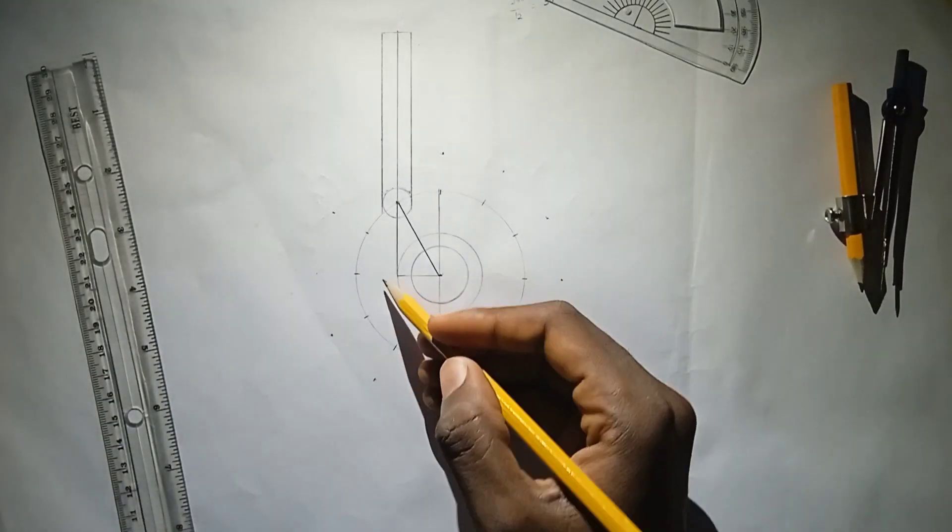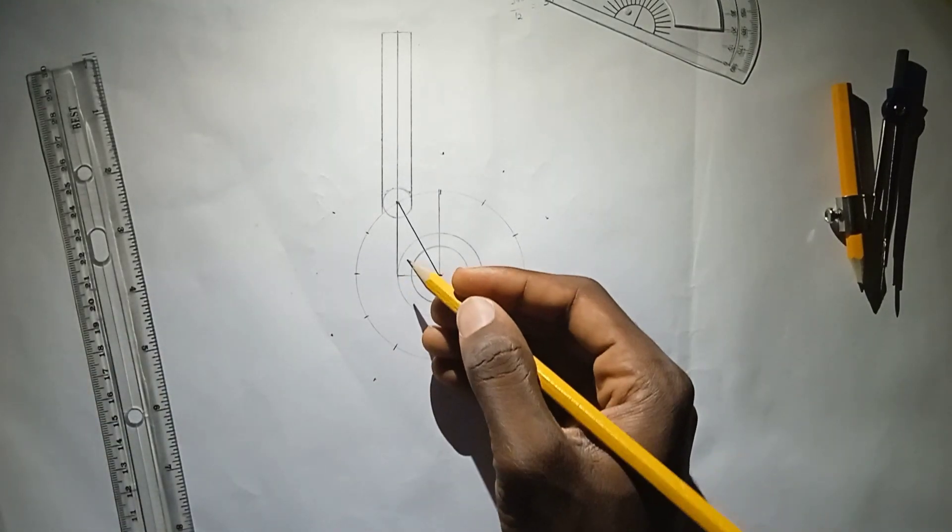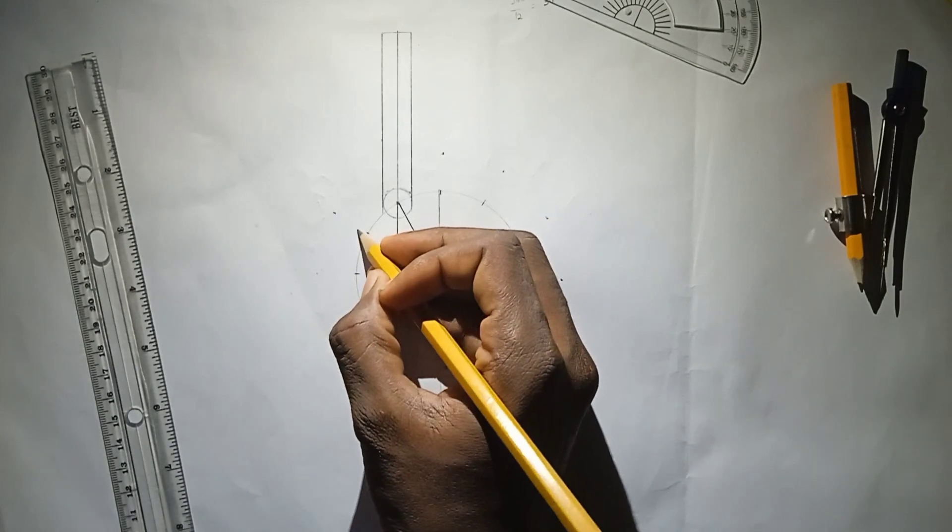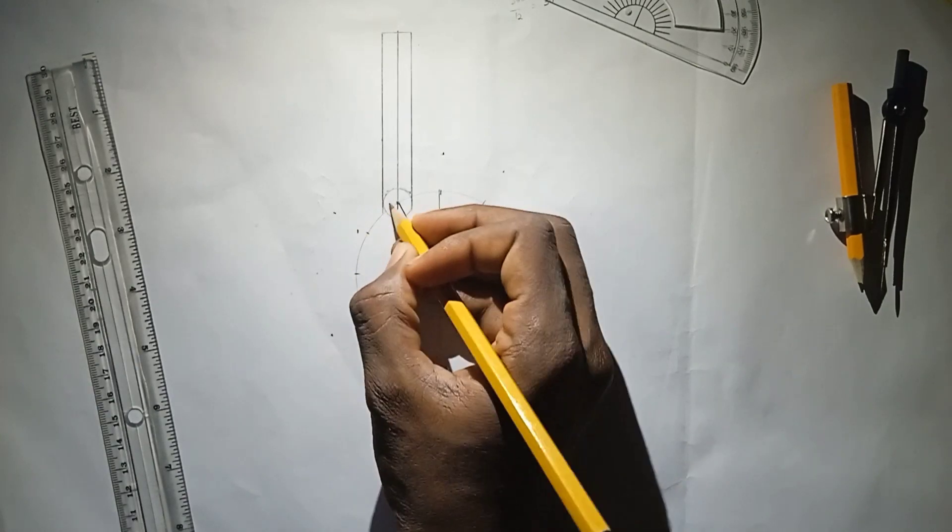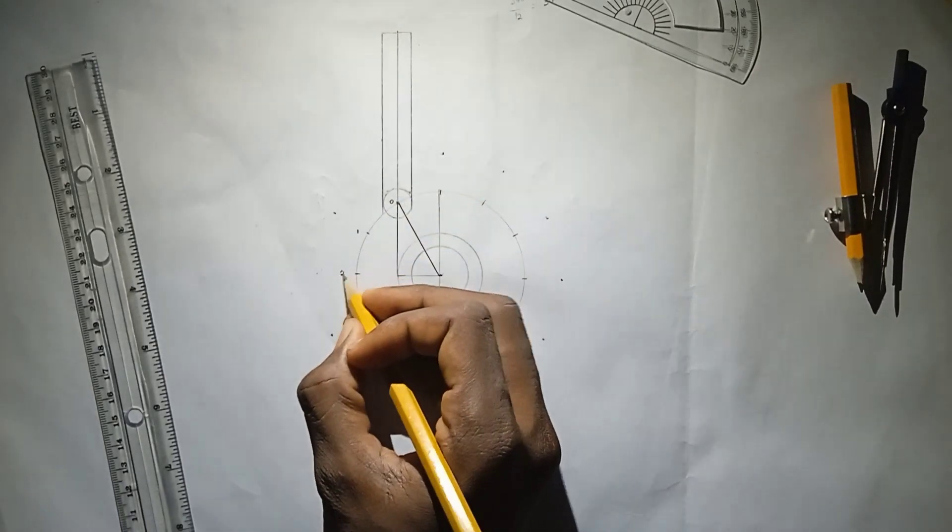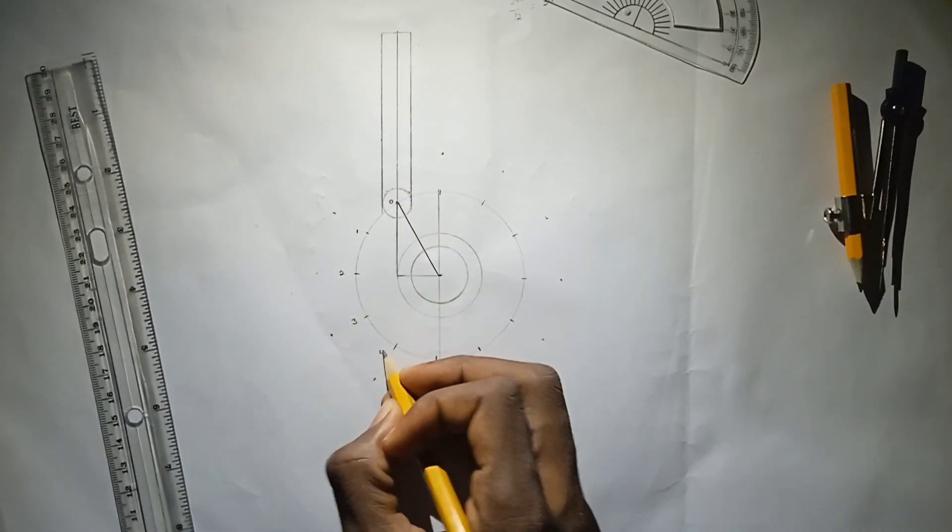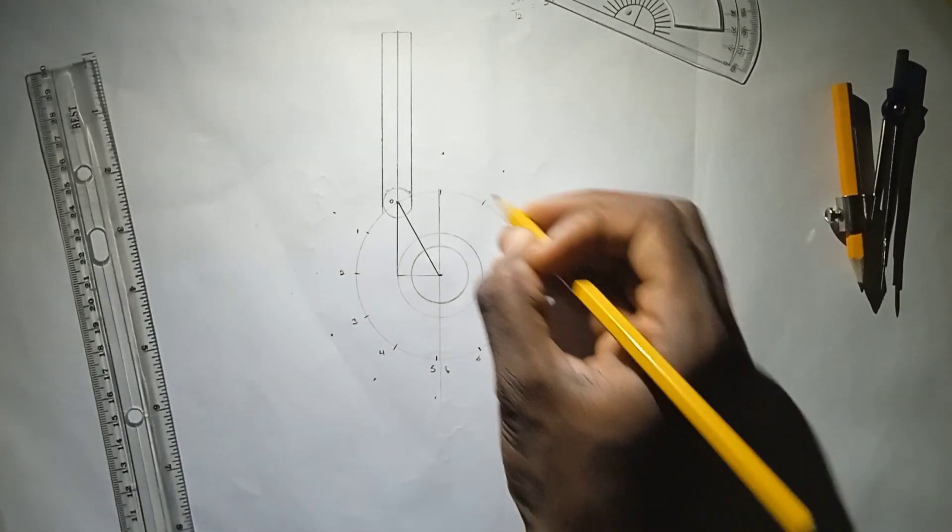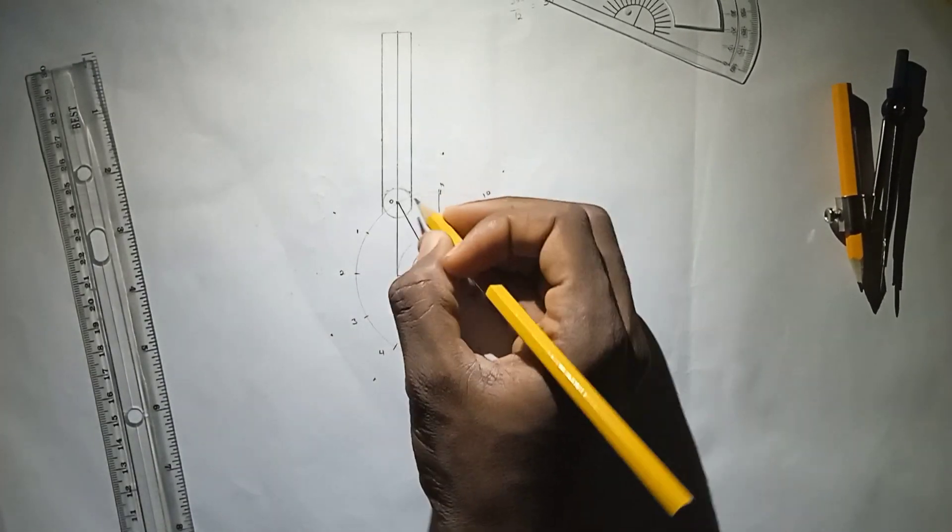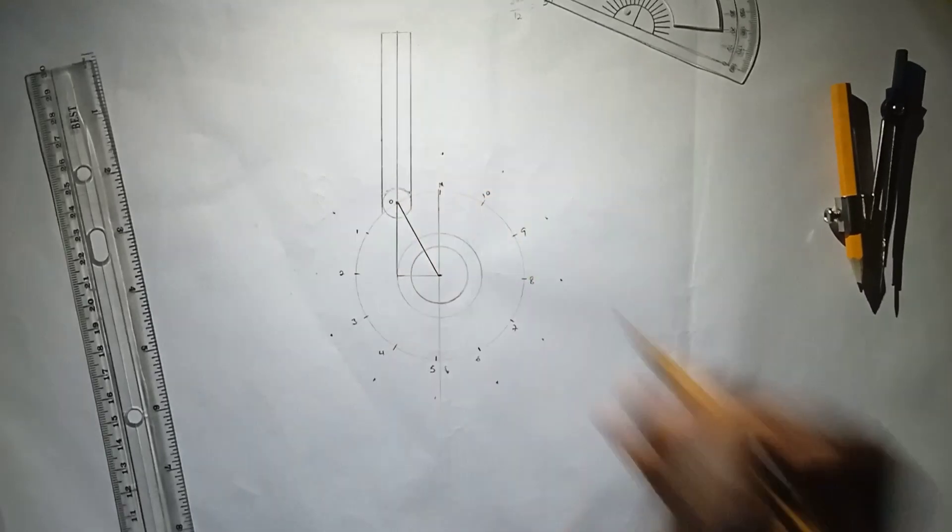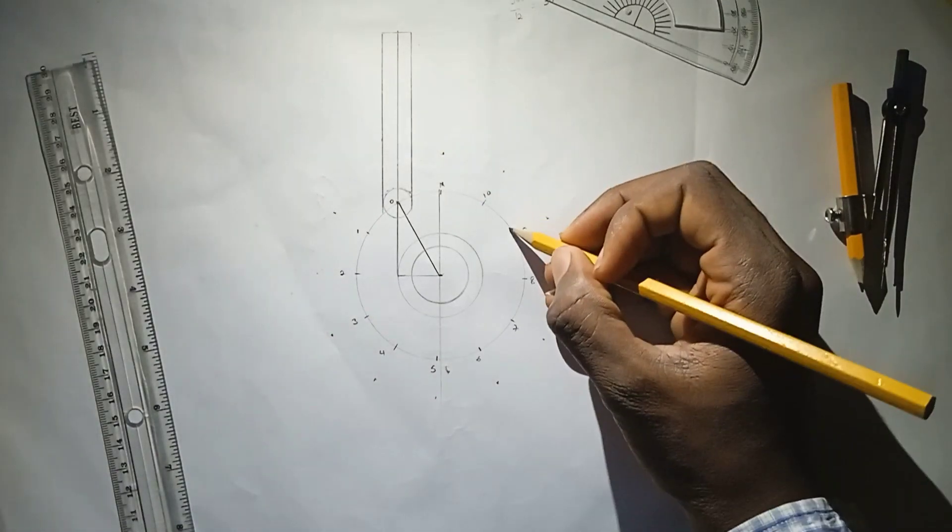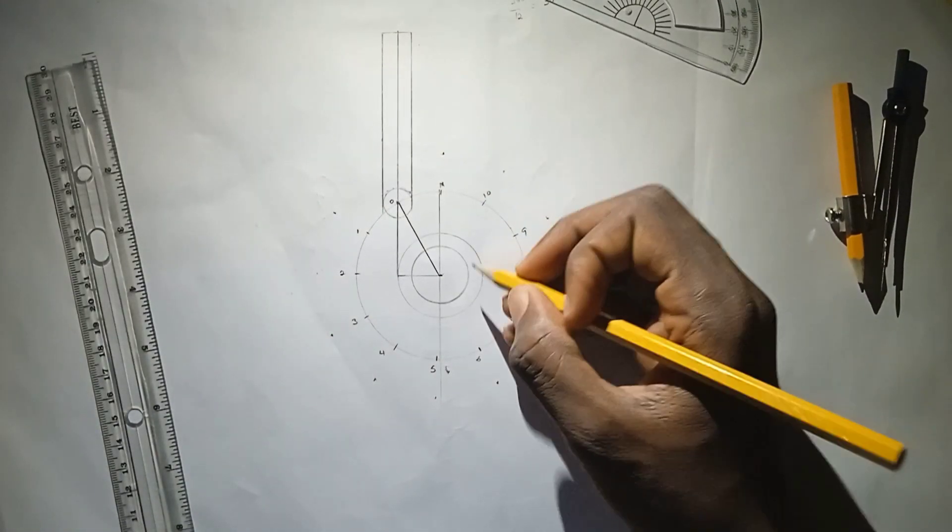So I've marked all the points on this base circle. I'm going to click here 1, because this is 0, 1, 2, 3, 4, 5, 6, 7, 8, 9, 10, 11, and back here 12.